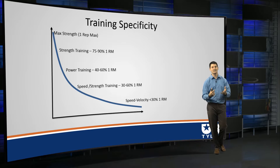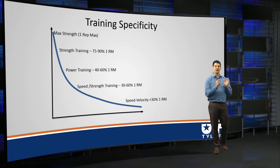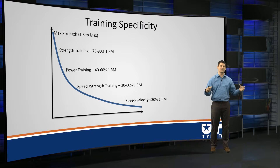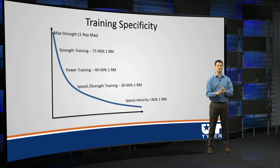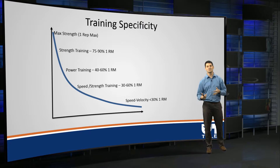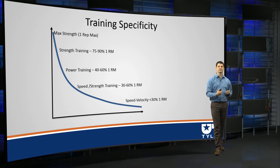Therefore, as you might expect, power training will take place somewhere in between — a combination of those ranges. You'll mix it up, working higher on the velocity side in the 40 percent range, sometimes in that 40 to 60 percent range to improve both force and velocity. For speed training, trying to improve speed is going to be working on the high-velocity side, usually lower than 50 percent of one rep max.